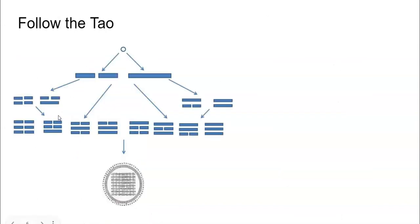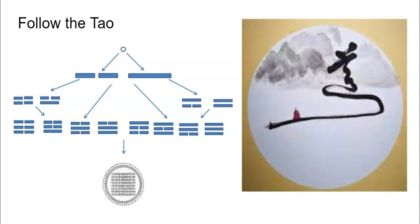That's why according to Tao Te Ching, Tao breathes one, one breathes two, two breathes three, three breathes everything. So it's very simple to follow the Tao.